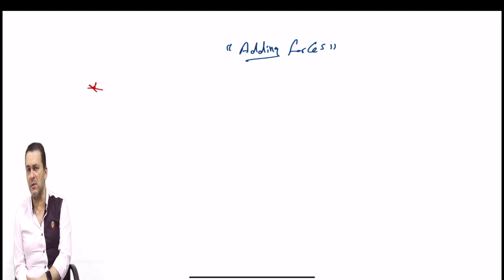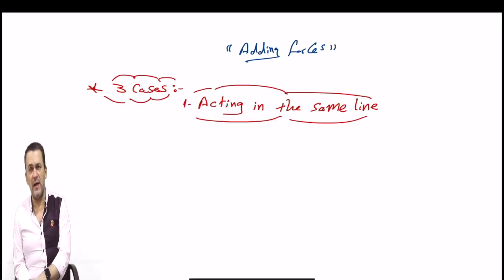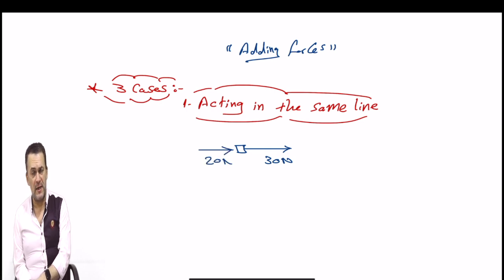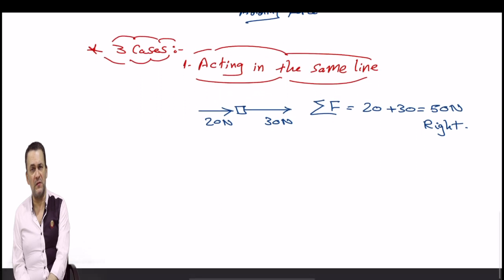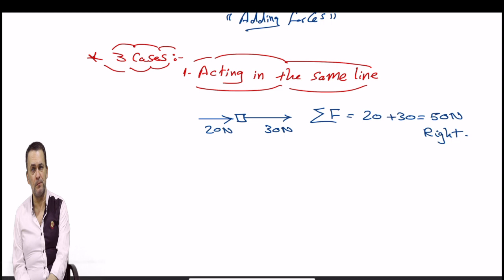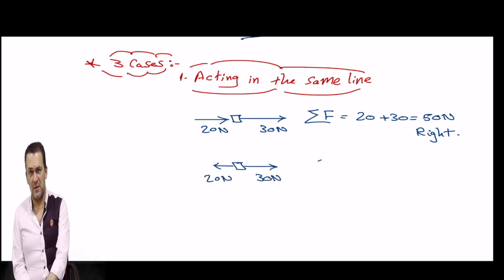Looking at this figure, if I have two forces acting on one body in the same direction — like 30 Newtons and 20 Newtons both acting to the right — when I add them, both can be considered positive. So I say 30 plus 20, because they are acting in the same direction and have the same sign. The answer will be 50 Newtons in the same direction they are both acting.